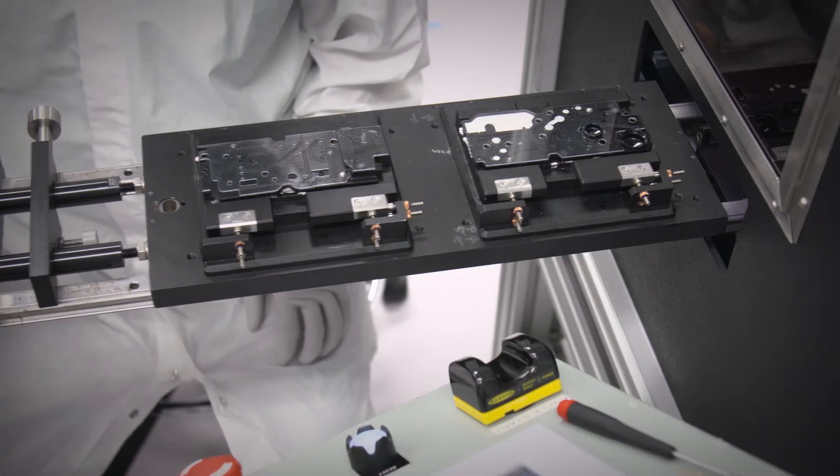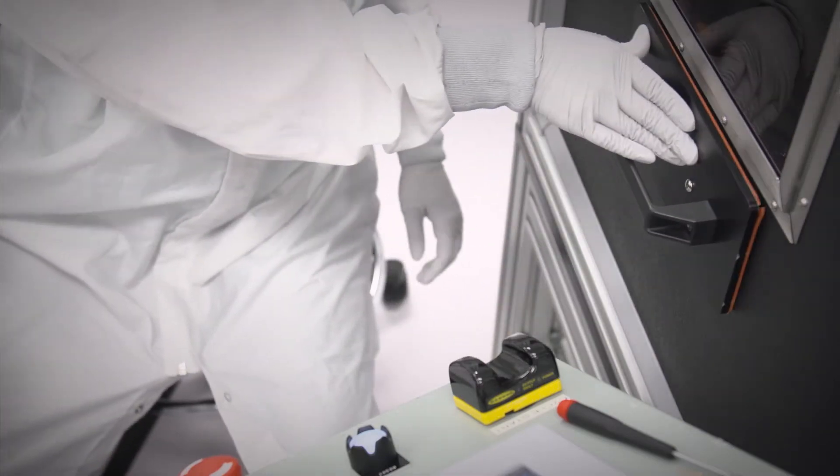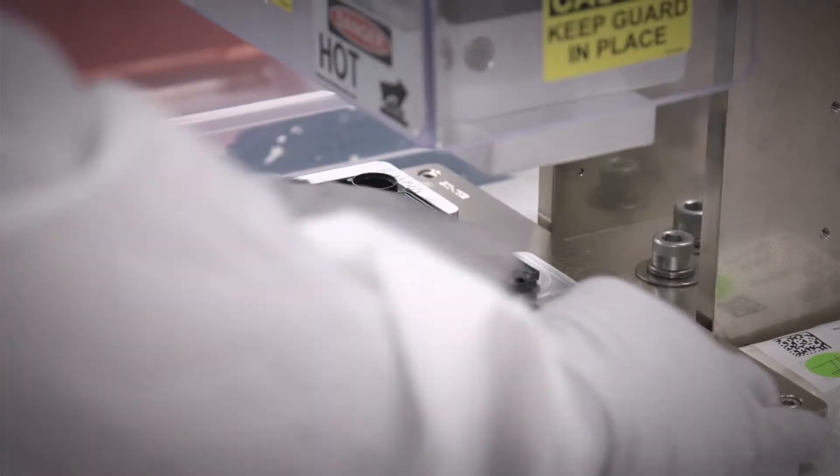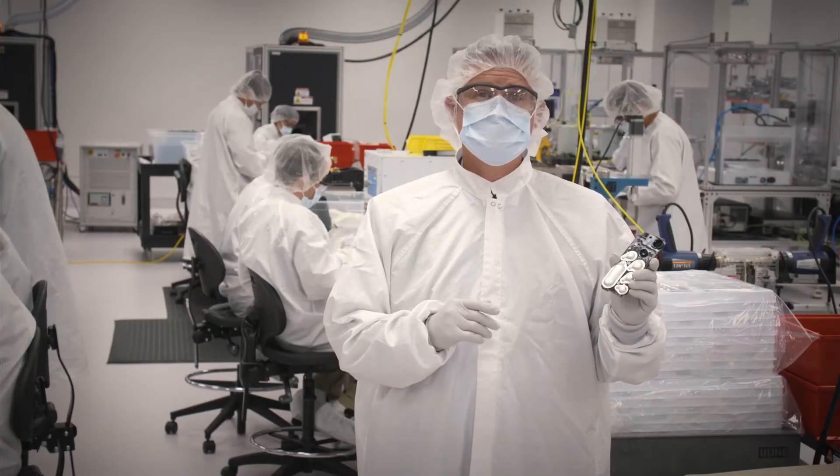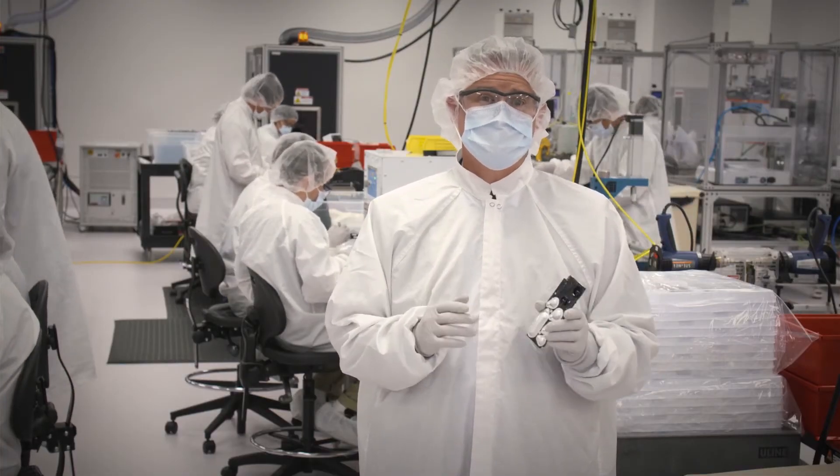The blister packs are assembled onto a custom molded plastic part that enables the dispensing of reagents based on the assay protocol. Each LRM is inspected and tested before it moves to the next step in the manufacturing process.